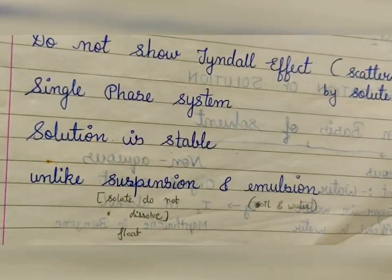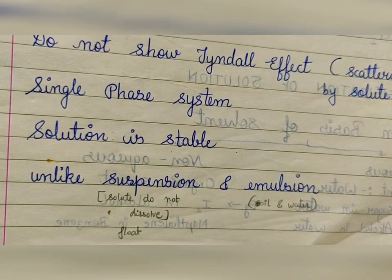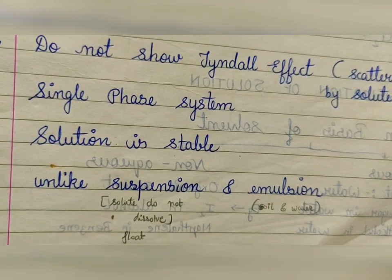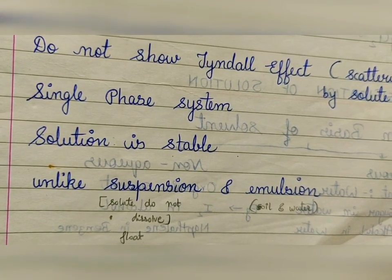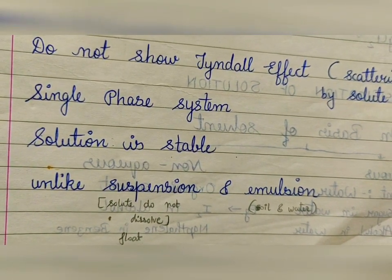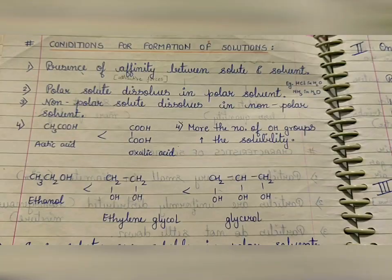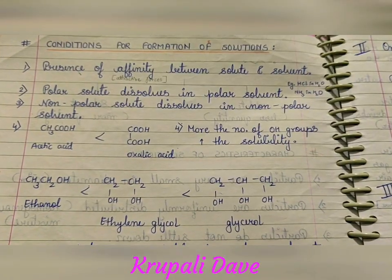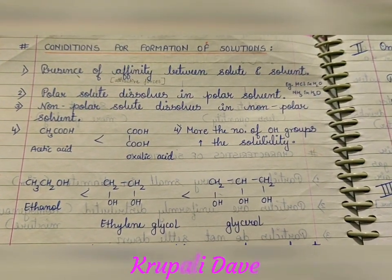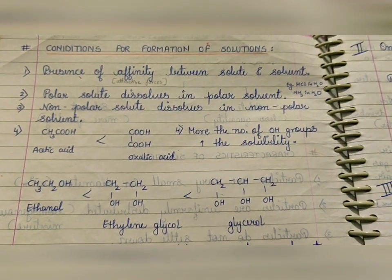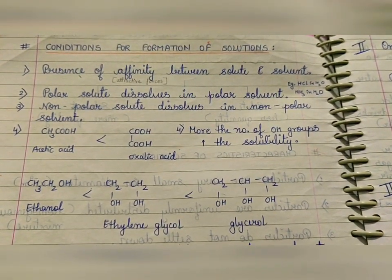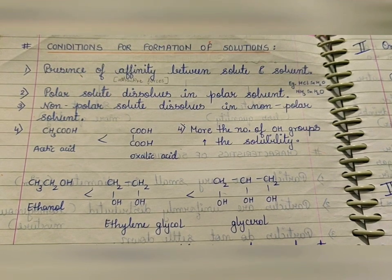In suspension, the solute does not dissolve — it floats. In emulsion, it is a mixture of oil and water. Now let's move on to another topic: the conditions for formation of a solution.